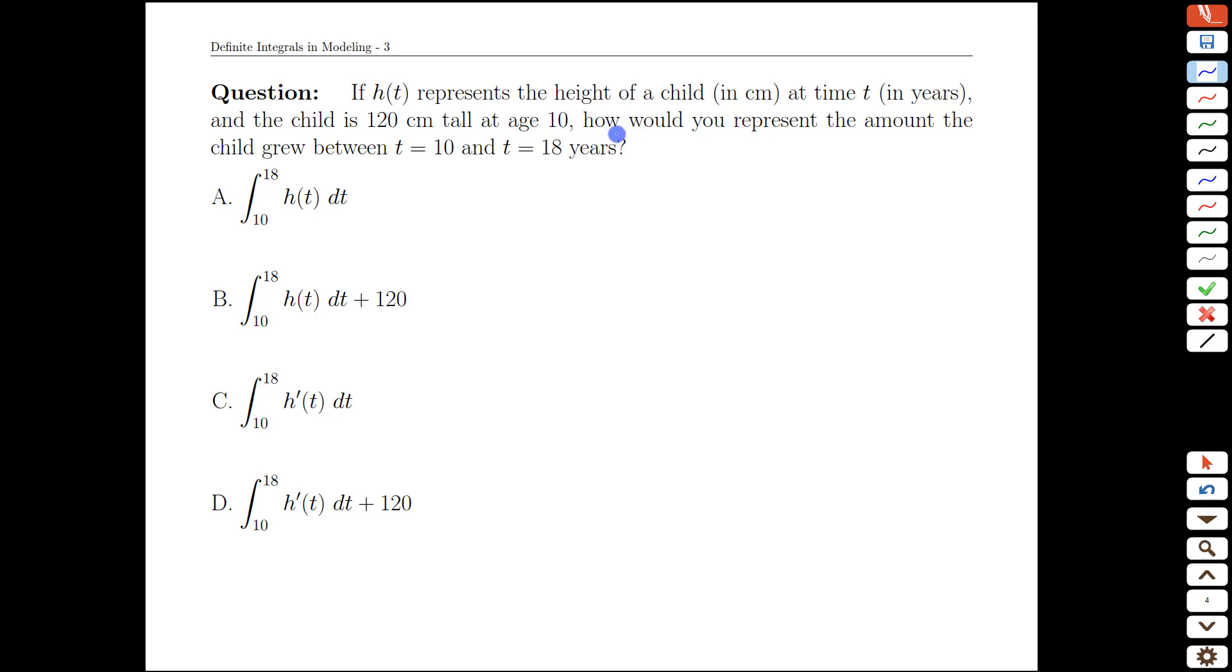And we were asked here, how would you represent the amount the child grew between t equals 10 and t equals 18 years. So basically pre-puberty to post-puberty. There will be a formulation of that. Take a look at the options down here and see if you can identify which integral here captures that amount of growth over that time frame. Pause the video and we'll check in in a moment.